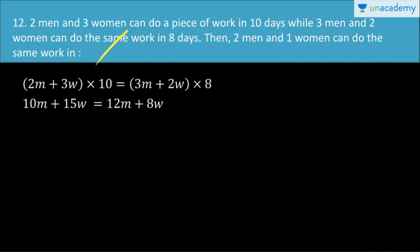Expanding: 2M into 5 gives 10M, plus 3 into 5 gives 15W. On the other side: 3 into 4 gives 12M, plus 2 into 4 gives 8W.